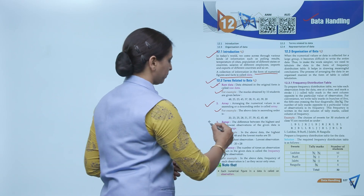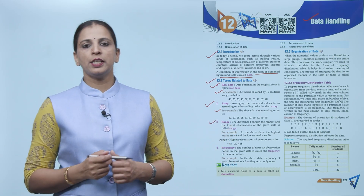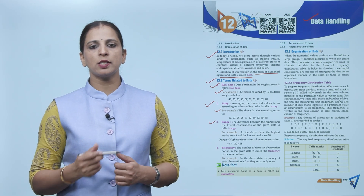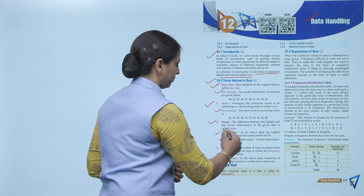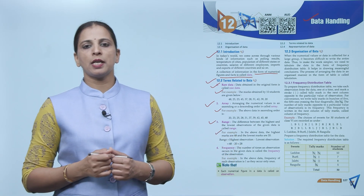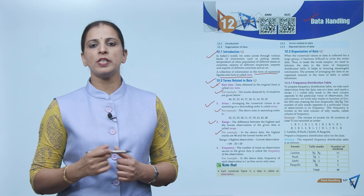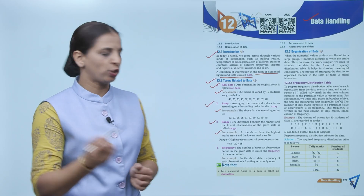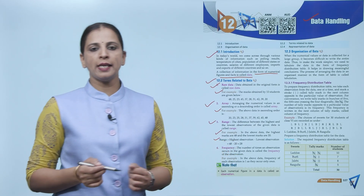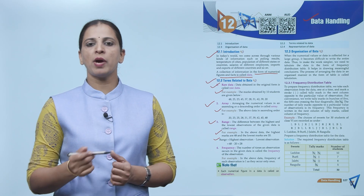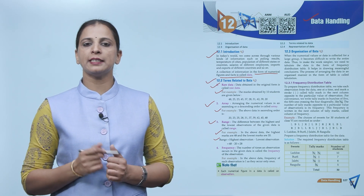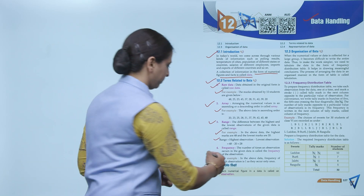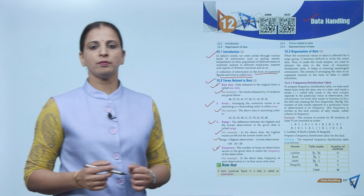Next is range. The difference between the highest and the lowest observations of the given data is called range. Formula: Range = Highest observation − Lowest observation. In the above data, highest marks = 48, lowest marks = 20, so Range = 48 − 20 = 28.